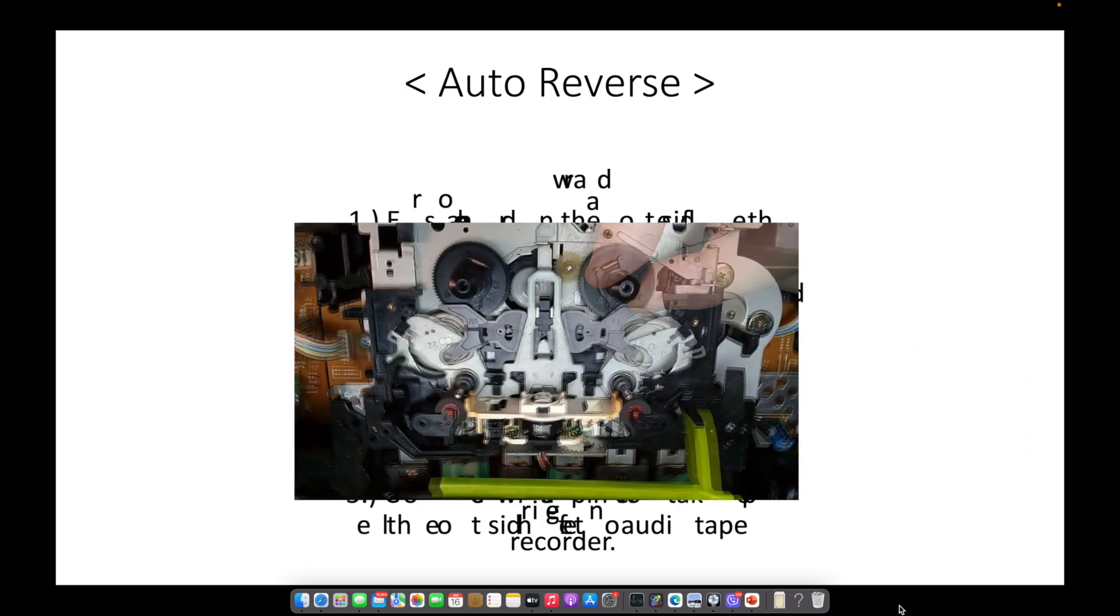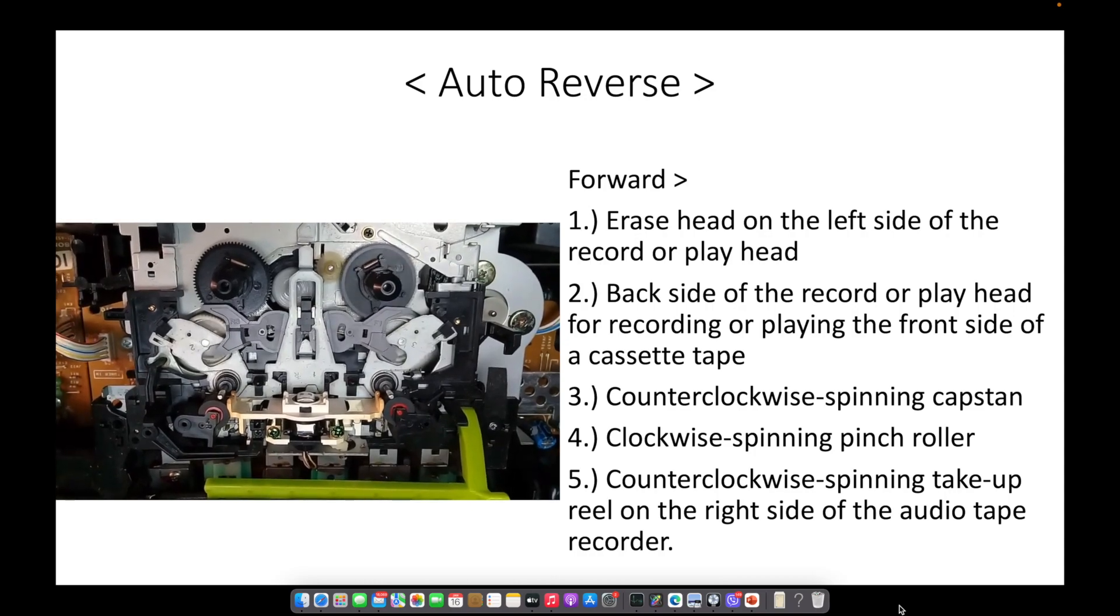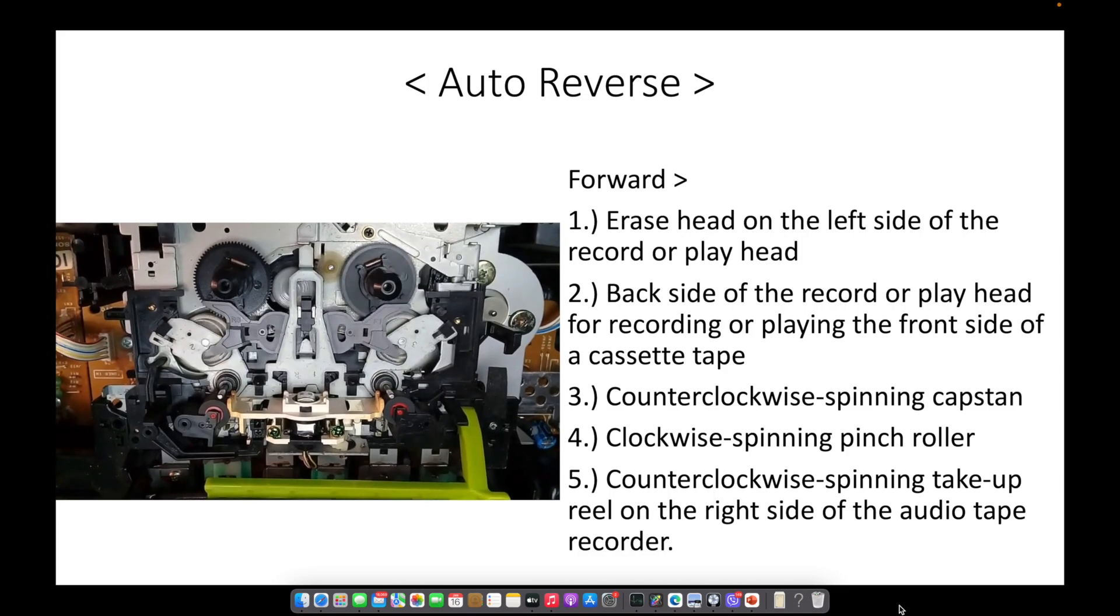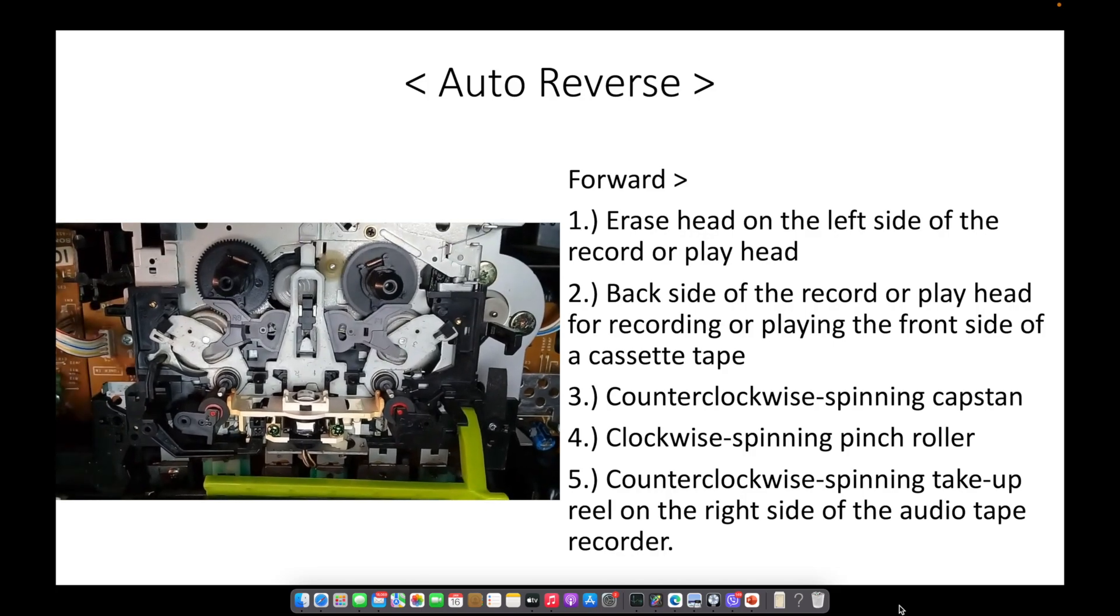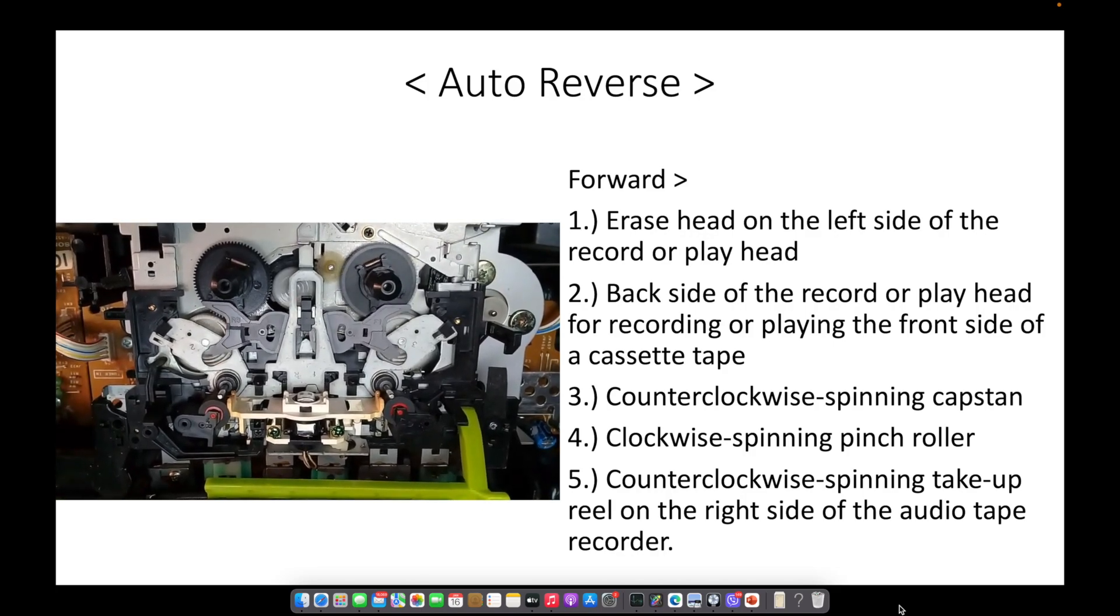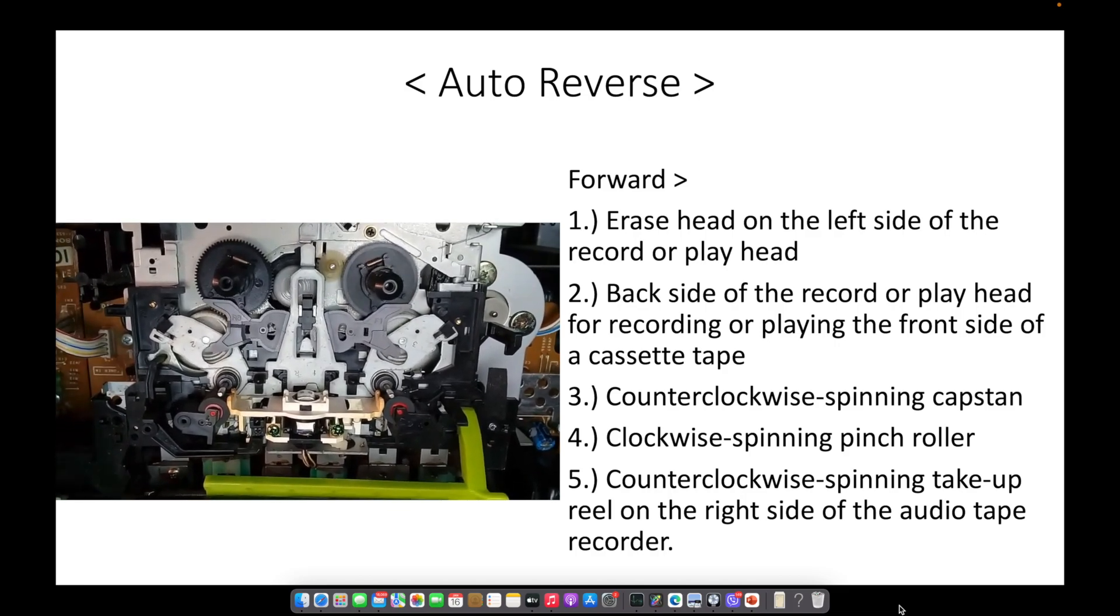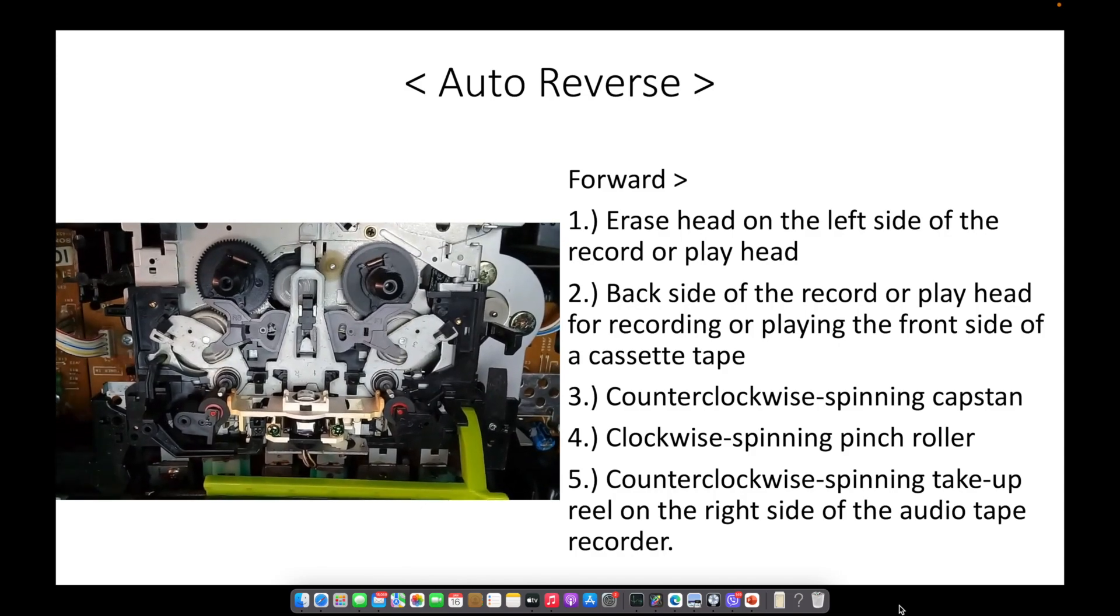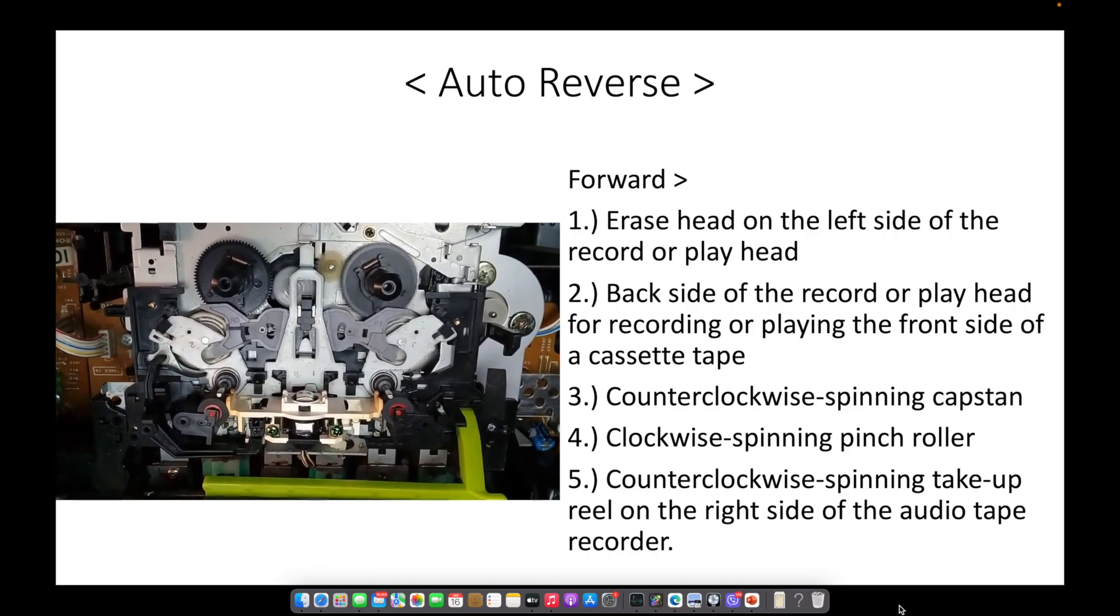In contrast, during forward playback where the ribbon rolls to the right, the erase head is on the left side of the record or playhead. This time, the back side of the record or playhead will be used for recording or playing the front side of a cassette tape. The capstan now spins counterclockwise on the right side.